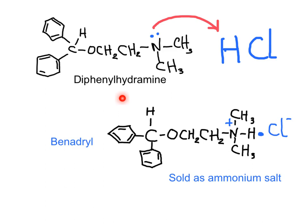Many amines with useful medicinal properties are sold as their ammonium salts. One example is Benadryl for allergies. The active ingredient is diphenhydramine, which upon reaction with hydrochloric acid becomes an ammonium salt. We see a tertiary amine where the hydrogen makes a brand new covalent bond, giving a positively charged nitrogen and a negatively charged chlorine — this is an ammonium salt.